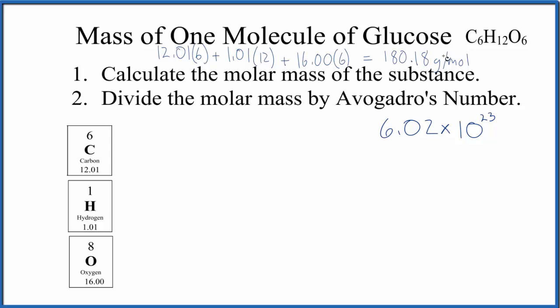So we have our molar mass for glucose, and that's 180.18 grams in one mole of glucose. We multiply that by a conversion factor because we know one mole of any substance, molecules or atoms, that's Avogadro's number.